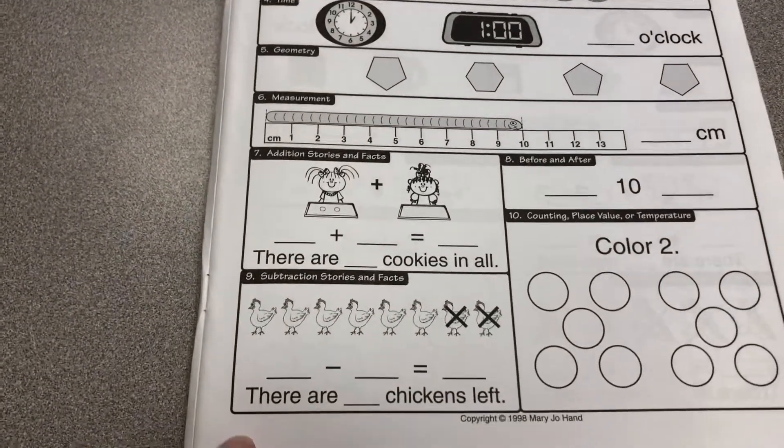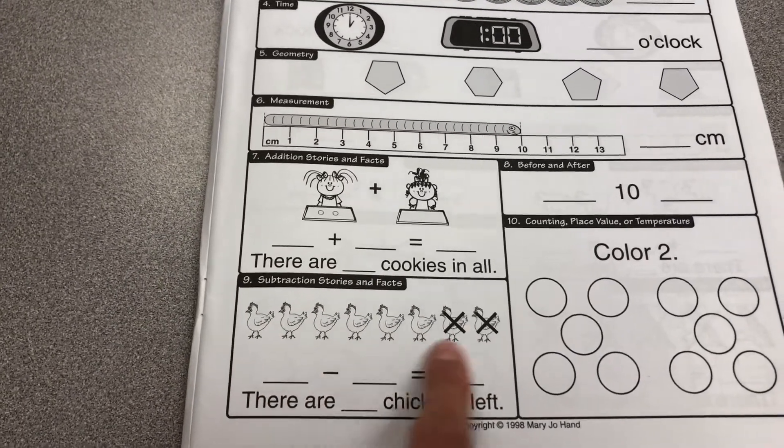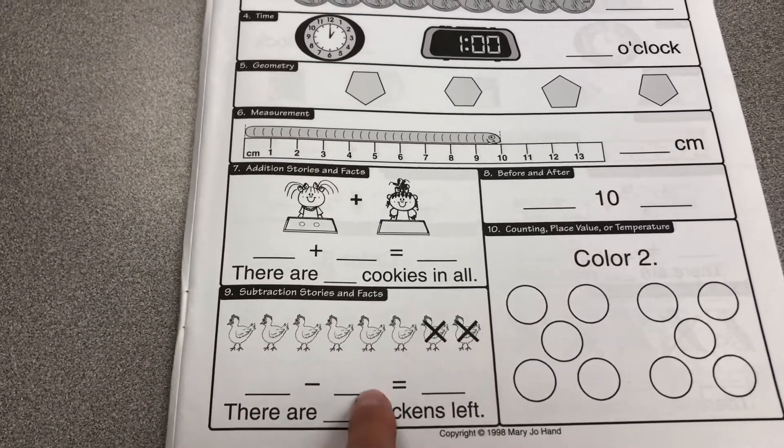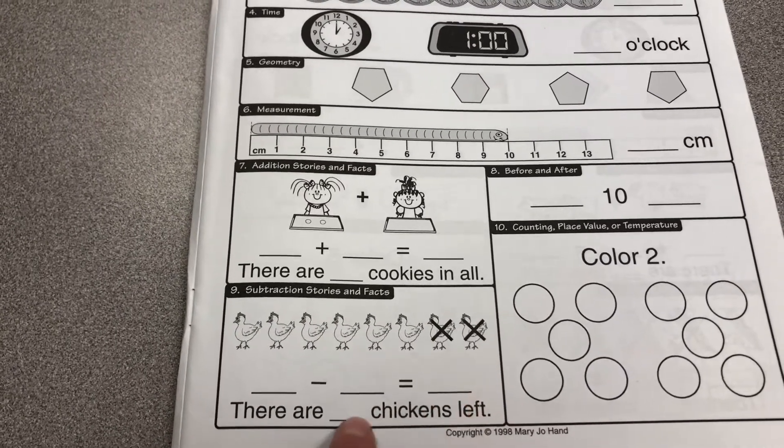Subtraction stories and facts. Write the number of chickens here. Take away what is shown and what is left. Don't forget to repeat this number here.